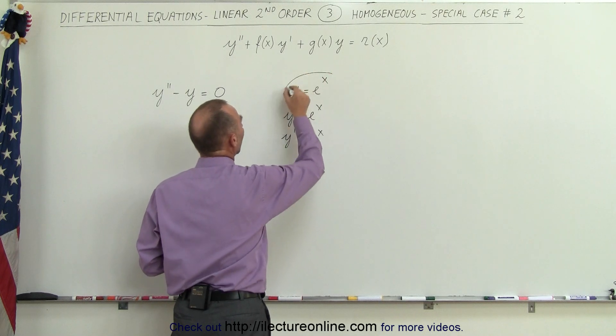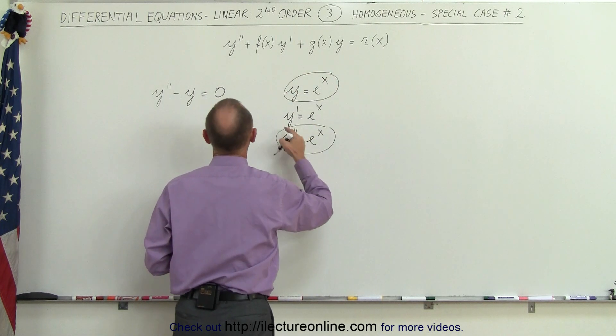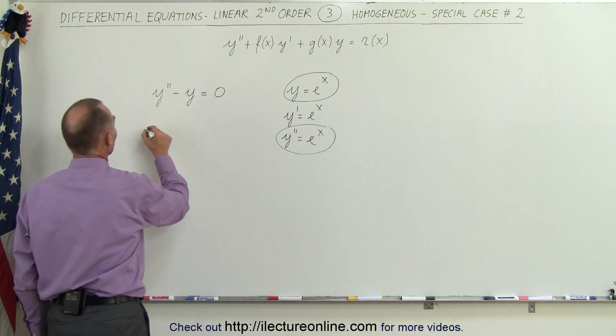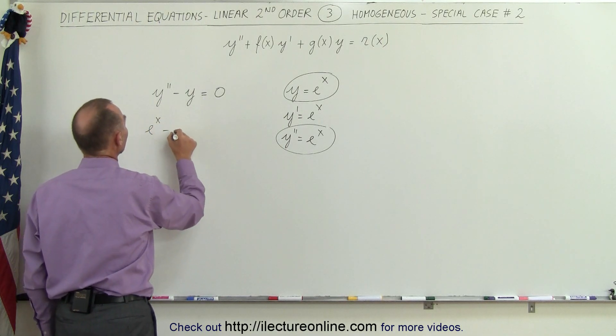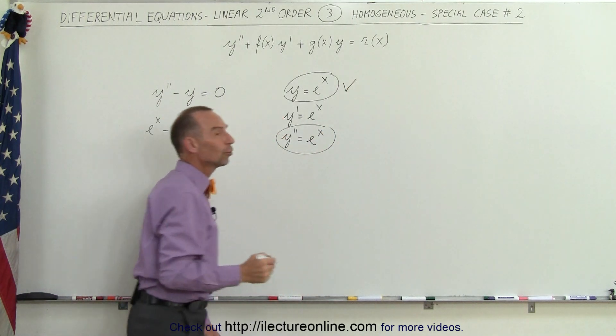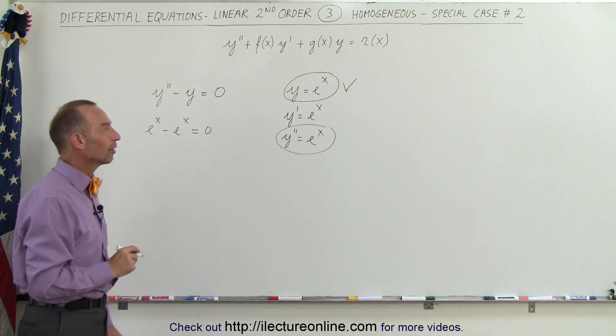When we plug in y equals e to the x and y double prime is e to the x into this differential equation, guess what? It does seem to work. We have e to the x minus e to the x is indeed zero. In other words, this is a legitimate solution to the differential equation before us.